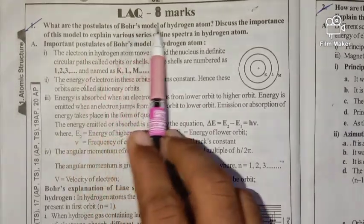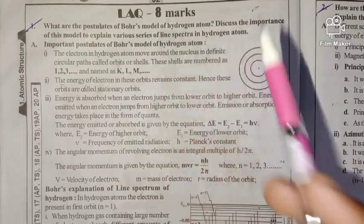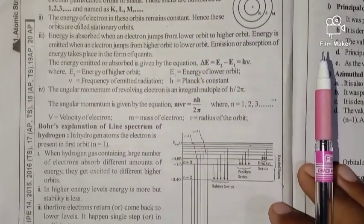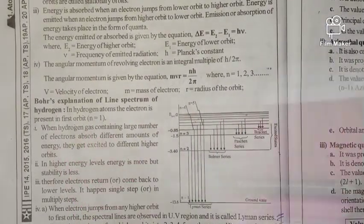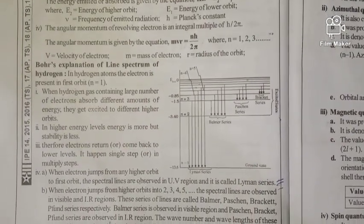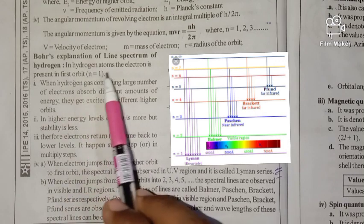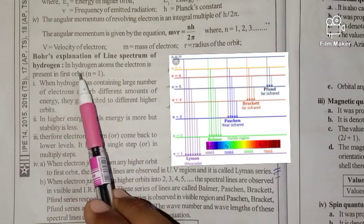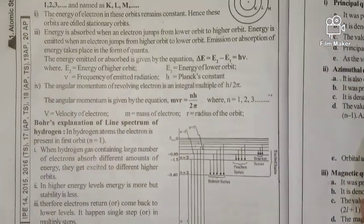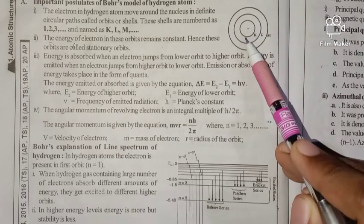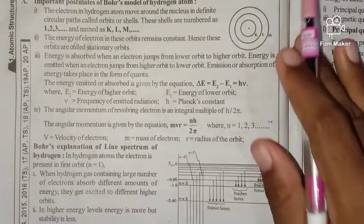Now we will explain how the various series of line spectrum of the hydrogen atom arise. The line spectrum of the hydrogen atom can be shown using an energy level diagram where n equals 1, 2, 3, 4 and so on.